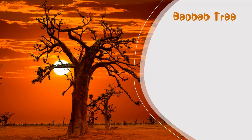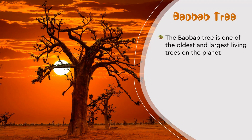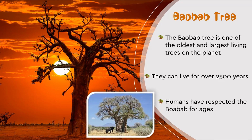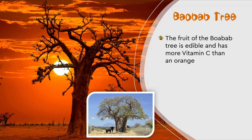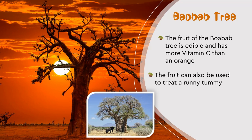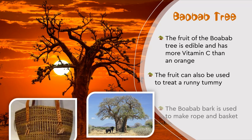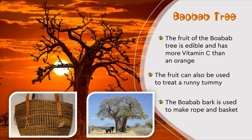The baobab tree is also one of the oldest living trees on the planet. They can live for over 2,500 years. People have respected these trees for ages — look at the size of this tree compared to the elephant standing in its shade. The fruit from the baobab tree is edible and has more vitamin C than an orange. The fruit can also be used to treat a running tummy — remember when we spoke about medicine? The bark can be used to make rope, which in turn can be used to make baskets and mats.